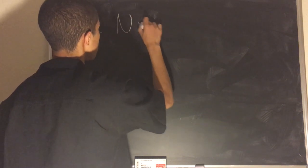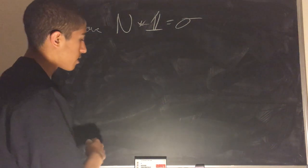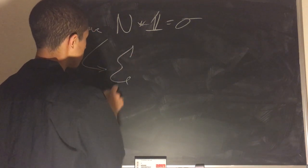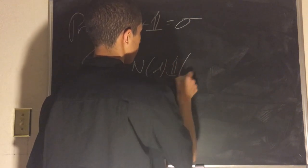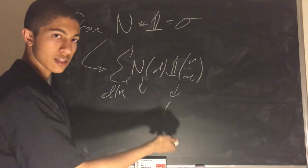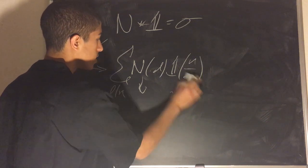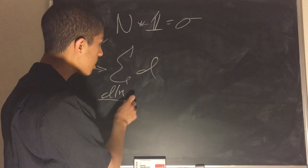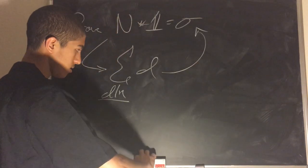Prove that N convoluted with 1 is equal to sigma. So again, if you forget what any of these functions are, you can reference my other video on that. We have sigma over D divides N of N(D) times 1(N/D). But 1(N/D) is always 1, because 1 of anything is 1. And N(D), because it spits back the input that you gave it, is always going to be D. So we get D times 1, which equals D. So this entire summand becomes D. And what happens when we take each of the divisors of N and add them together? That's basically summing the divisors. And we have a sum of divisors function, which is equal to sigma. So wonderful.